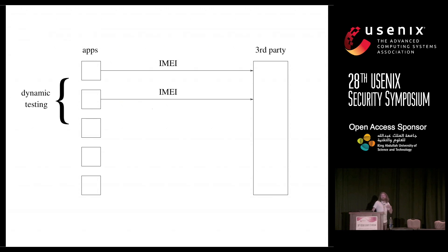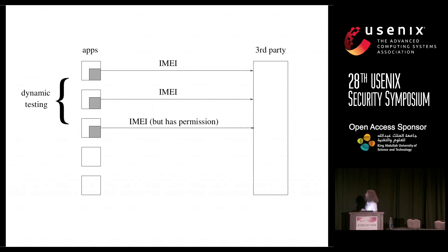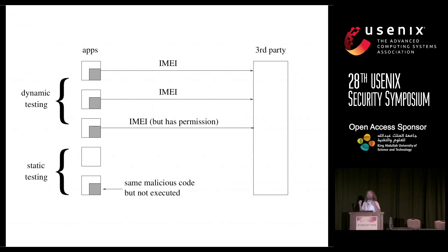To show this visually: we have a bunch of apps and some third party on the internet. Through our dynamic analysis, we find some of them sending the IMEI to this third party — a third one may also be sending the IMEI but it has the read phone state permission, so we don't flag it as suspicious. We reverse engineer one app, find the malicious code responsible for the transmission, and fingerprint it. We can then find it in other apps, and even search through all apps in our corpus. We prefer dynamic analysis because we get real evidence that these occurred in practice.